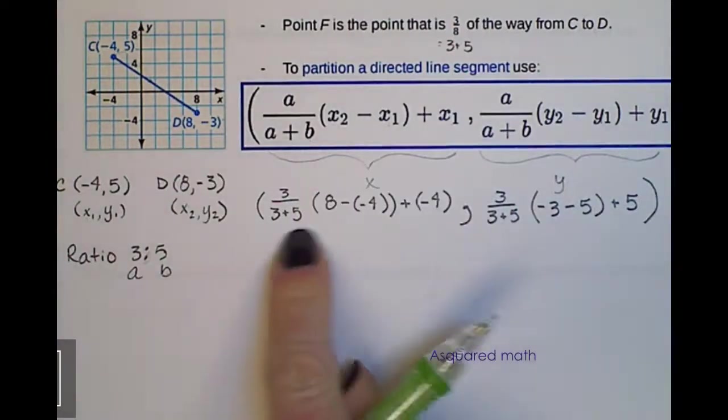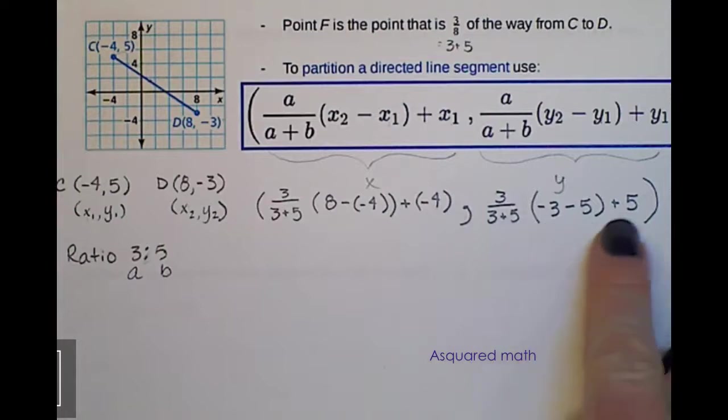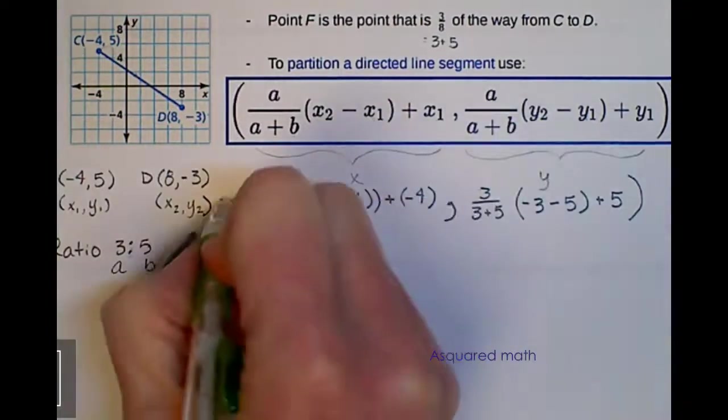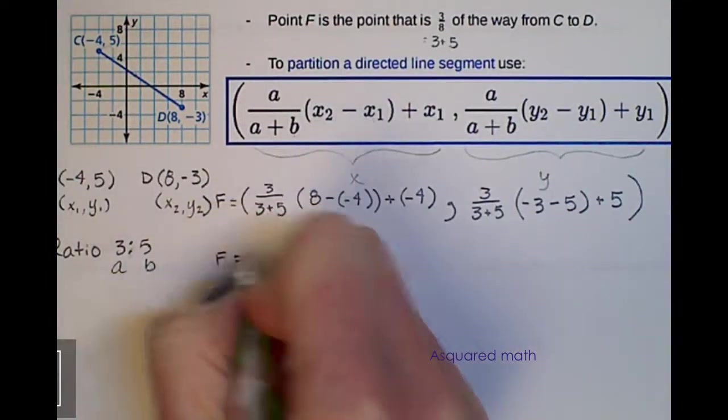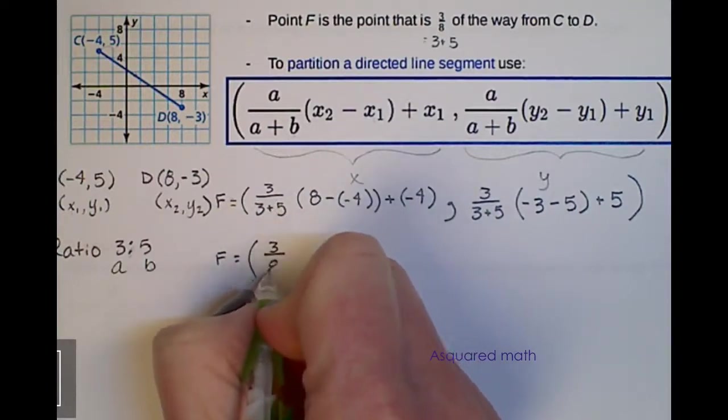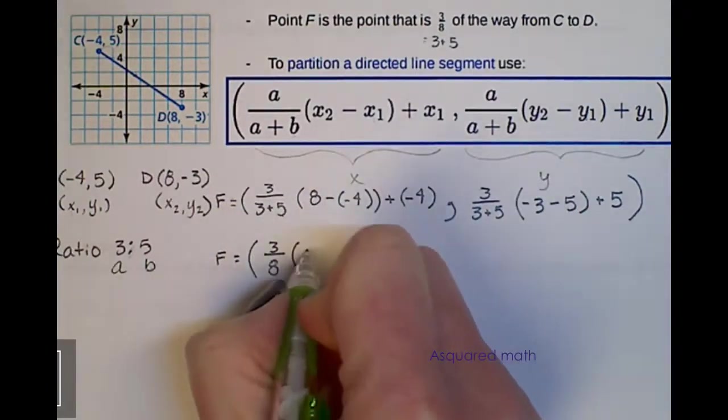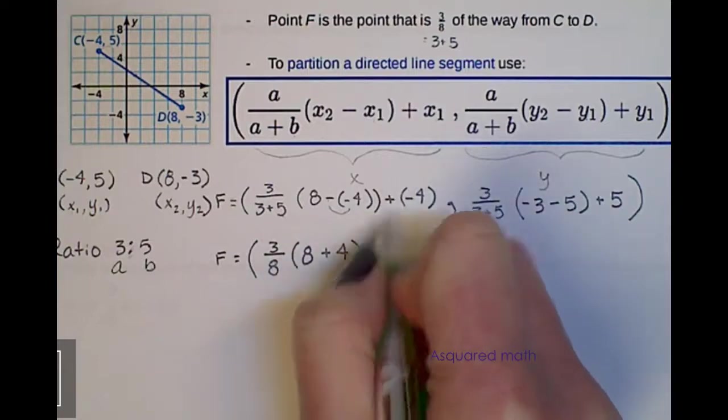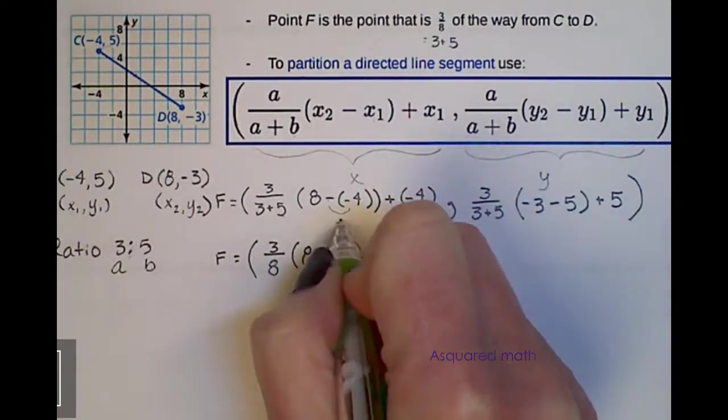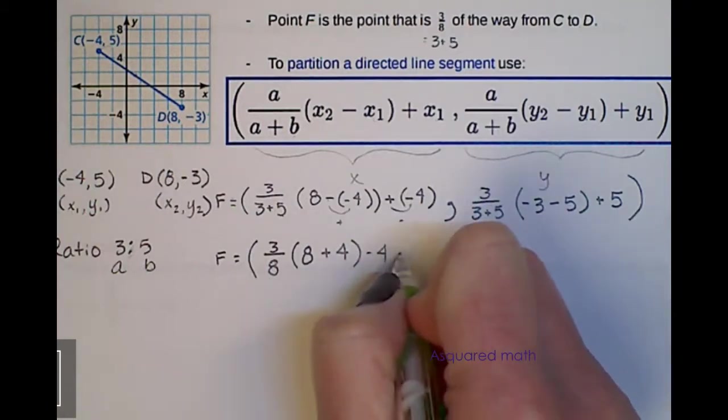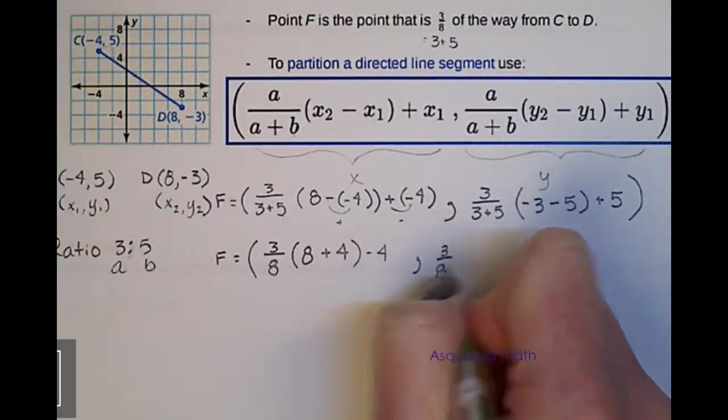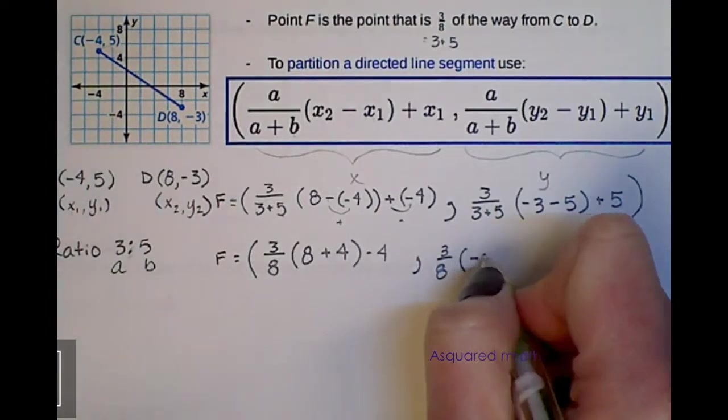So again, this whole part is our x part of the coordinate. This is our y portion of the coordinate. So now we just have to do our math. This is point F. So F equals 3 over 8, because 3 over 3 plus 5, times 8. A negative times a negative gives us positive, so plus 4. And then positive times negative gives us negative, so we have minus 4. And then 3 over 3 plus 5, or 3 eighths times our negative 8 plus 5.